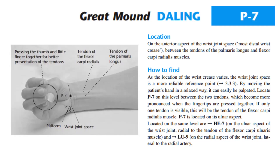Located on the same level is Heart 7, on the ulnar aspect of the wrist joint, radial to the tendon of the flexor carpi ulnaris muscle. And Lung 9 on the radial aspect of the wrist joint, lateral to the radial artery.